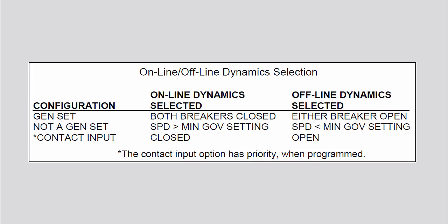When not configured for a generator application, the 505 uses the programmed mid governor speed setpoint setting to determine which set of dynamic values are used by the speed PID. The speed PID's online dynamics are selected when turbine speed is above the mid governor speed setpoint setting, and the offline dynamics are selected when turbine speed is below it.